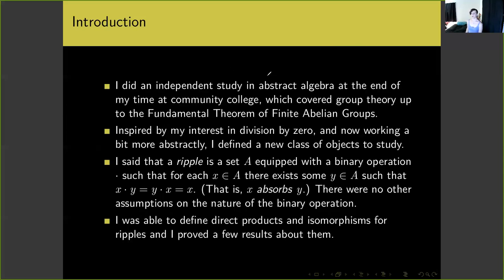I did an independent study in abstract algebra at the end of my time at community college, which covered group theory up to the fundamental theorem of finite abelian groups — not finitely generated abelian groups, just finite abelian groups. Inspired by my interest in division by zero and now working more abstractly, I defined a new class of objects to study. I said that a ripple is a set A equipped with a binary operation so that for each x in A there exists some y in A such that x times y equals y times x equals x. This is to say that x absorbs y, similar to the behavior zero has within familiar number systems, where zero times x always equals zero.